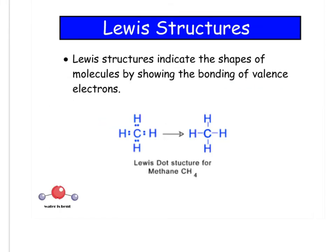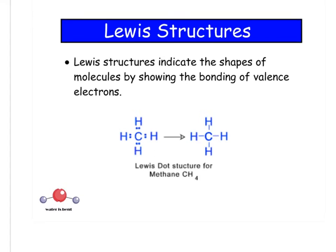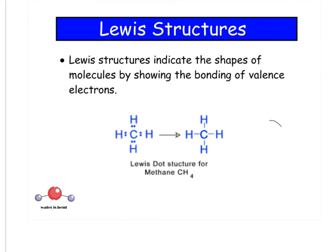Molecular geometry. Lewis structures are the way we draw covalent molecules. A Lewis structure indicates the shape of molecules by showing the bonding of valence electrons. On the periodic table, it tells you your valence electrons by the group number, 1A, 2A. That's how you know how many valence electrons it has, but then you indicate it with a dot. So carbon has four valence electrons, so you would put four dots around carbon.